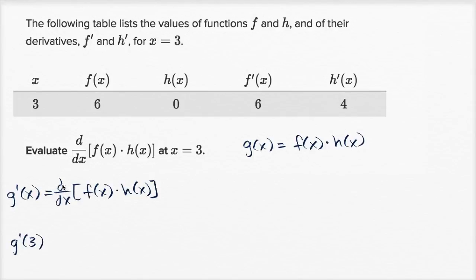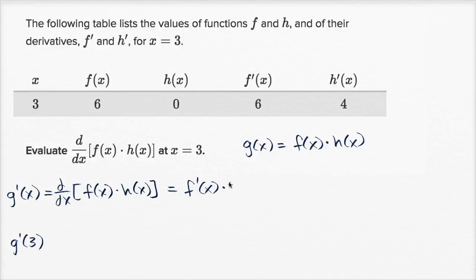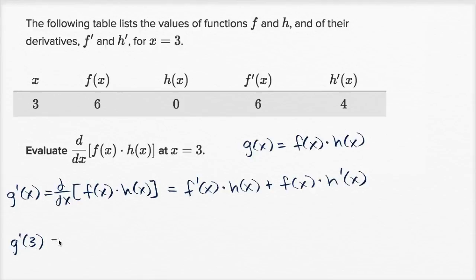They're asking us to take the derivative with respect to x of the product of two functions that we have some information about. If we're taking the derivative of a product of two functions, the product rule could prove useful here. So applying the product rule, this is going to be equal to the derivative of the first function, f prime of x, times the second function h of x — not taking its derivative — plus the first function f of x times the derivative of the second function, h prime of x.